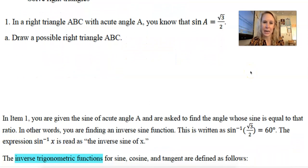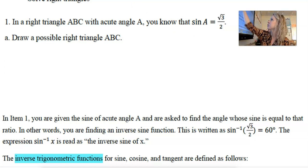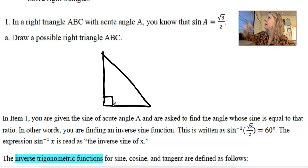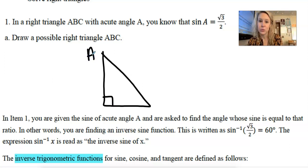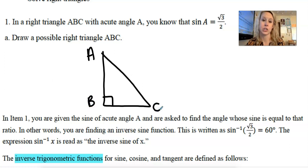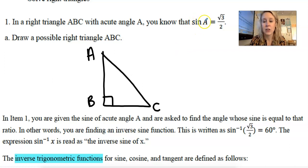In right triangle ABC with acute angle A, if I were to draw a right triangle, the acute angle has to be A. It can either be the top one or the bottom one — you kind of get to pick. So here would be a possible right triangle; it doesn't really matter. As long as A is an acute angle, we know that sine of A is the square root of 3 over 2.